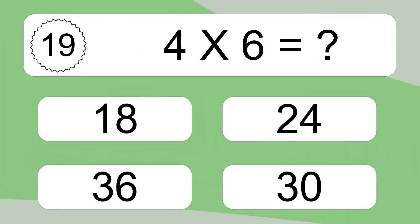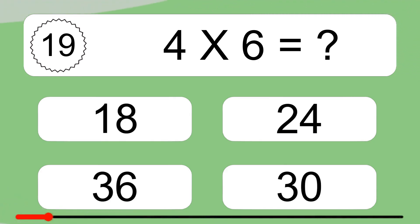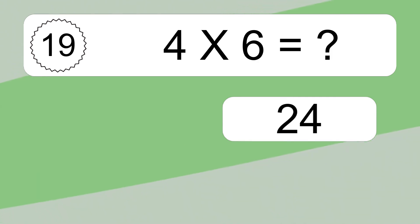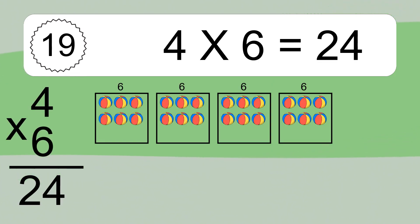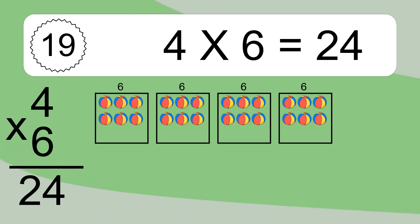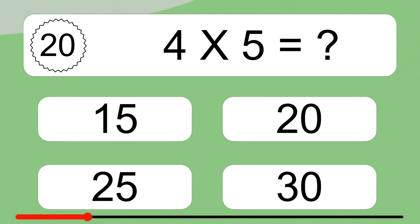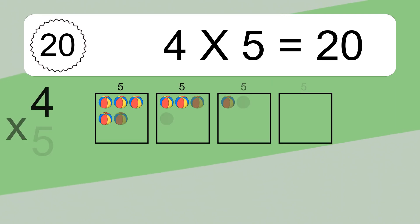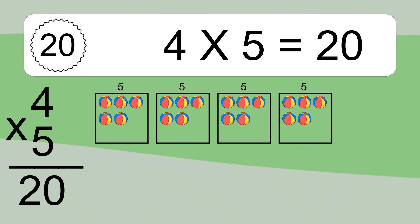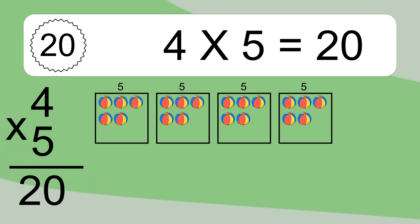4 times 6 equals what? We have 4 boxes, and each box has 6 colorful balls inside. If you count all the balls in all the boxes together, you will have 4 times 6 balls. We have 4 boxes, and each box has 5 colorful balls inside. If you count all the balls in all the boxes together, you will have 4 times 5 balls. This equals 20 balls.